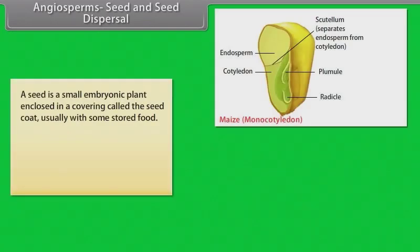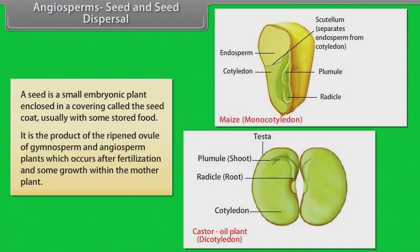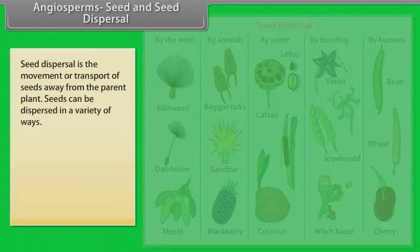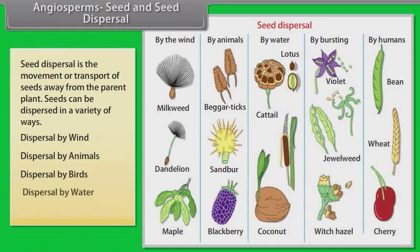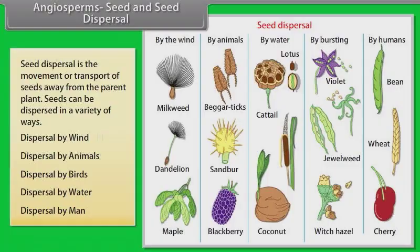A seed is a small embryonic plant enclosed in a covering called seed coat, usually with some stored food. It is the product of the ripened ovule of gymnosperm and angiosperm plants which occurs after fertilization and some growth within the mother plant. Seed dispersal is the movement or transport of seeds away from the parent plant. Seeds can be dispersed in a variety of ways: dispersal by wind, dispersal by animals, dispersal by water, and dispersal by humans.